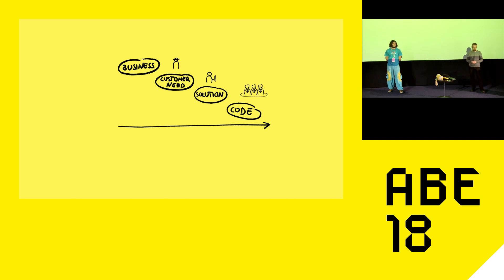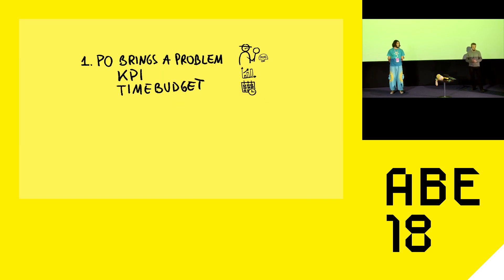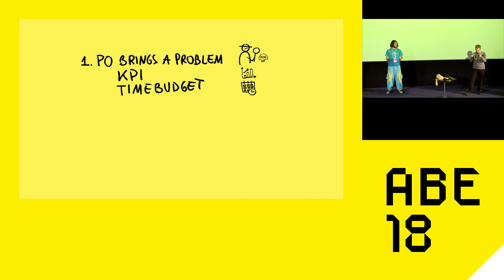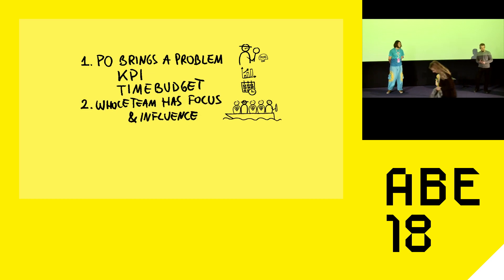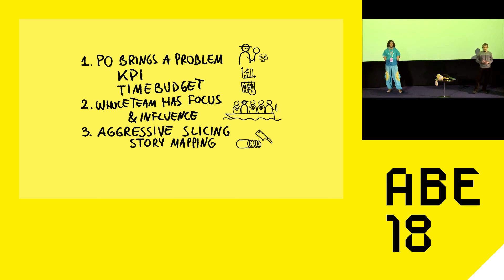We want to change this picture so the whole team works knowing the customer need, and they work together on creating ideas and implementing them. This is the short prescription of how we did that. First, the PO brings a problem instead of a pre-digested solution — ideally with a KPI, which helps the team focus on the solution and target — and also a time budget to make things happen within time. We want the whole team focused on one particular problem at the same time, with everybody taking part in making decisions. We also introduce very aggressive slicing, ideally using the story map technique.